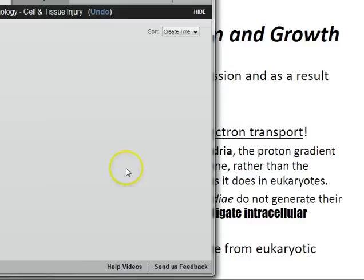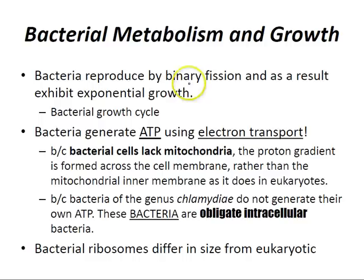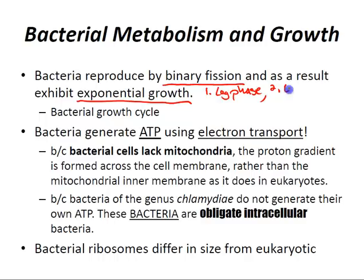Bacteria reproduce by binary fission and as a result exhibit exponential growth. Binary fission occurs when a single parent produces two identical progeny. The bacterial growth cycle has four main stages: the lag phase, the log phase, the stationary phase, and the death phase.